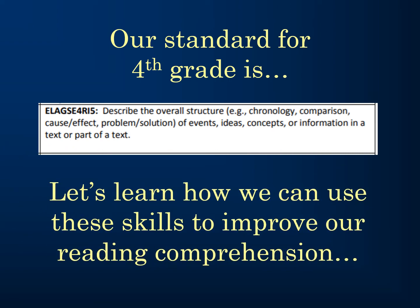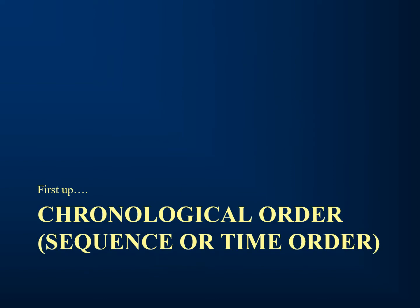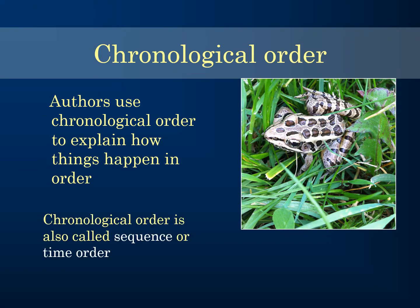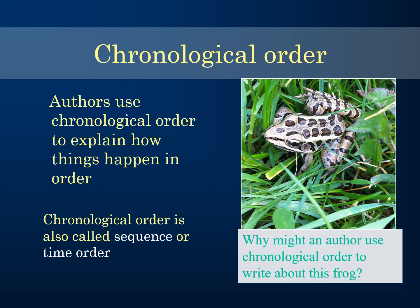First up: chronological order. Authors use chronological order to explain how things happen in order. It is also called sequence or time order. For example, an author might use chronological order to write about a frog's life cycle, or the steps it takes to create its nest or habitat.